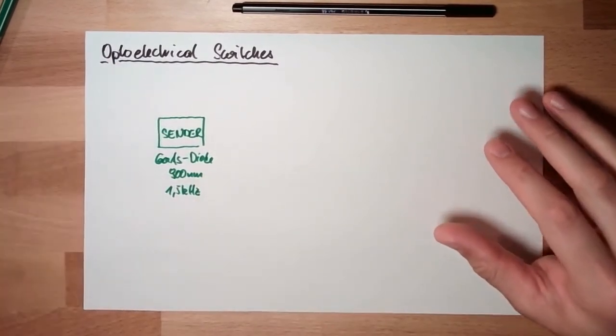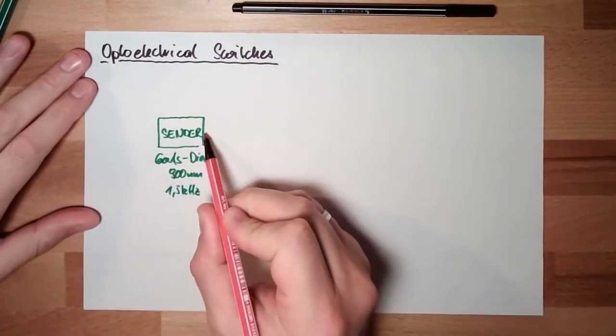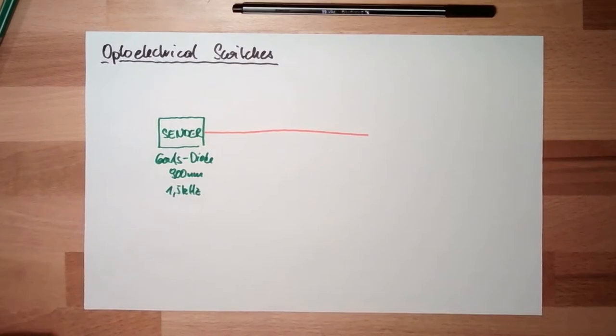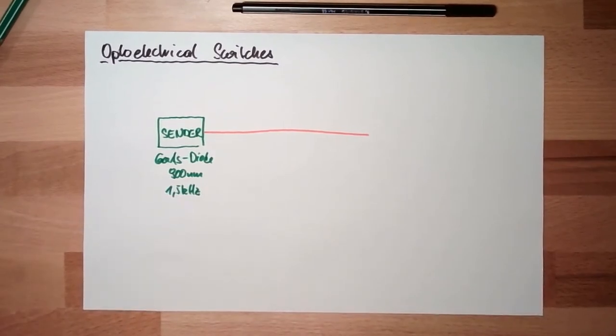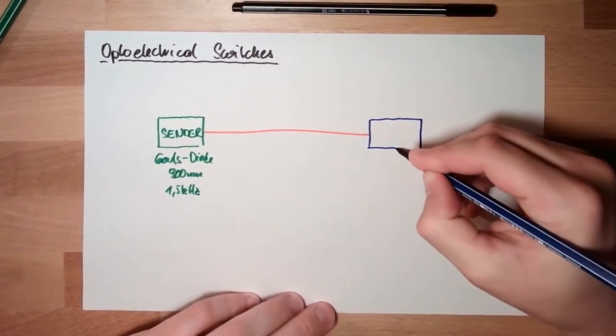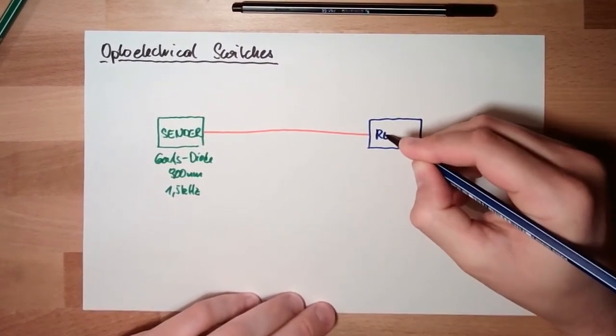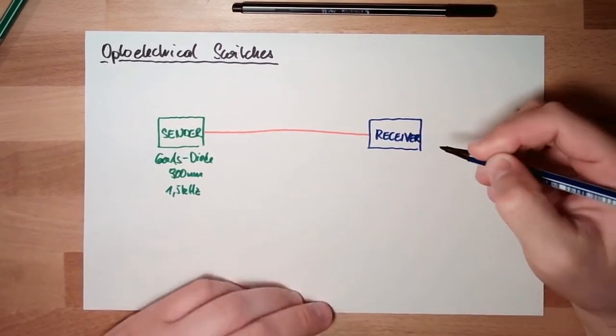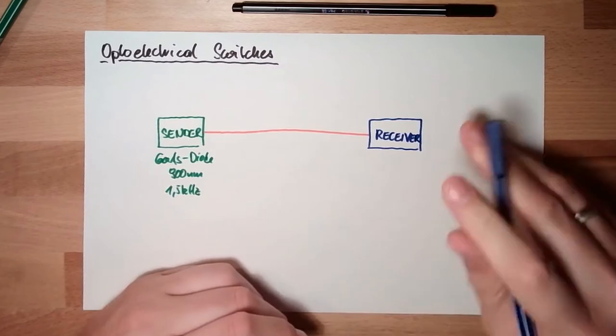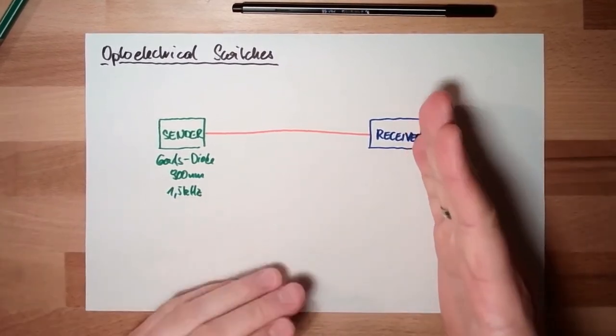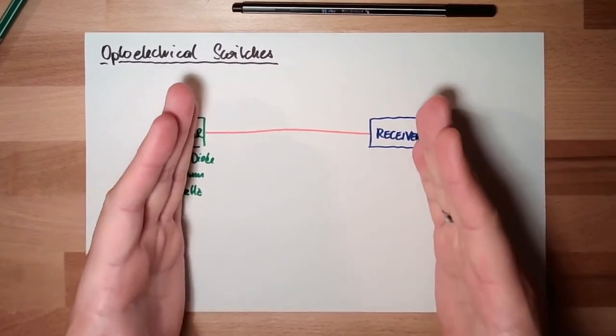There's a sensor. There's a beam going out. And somewhere, somewhere there is a receiver. Right now the receiver can see the light of the sender.